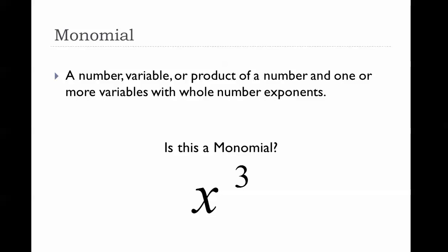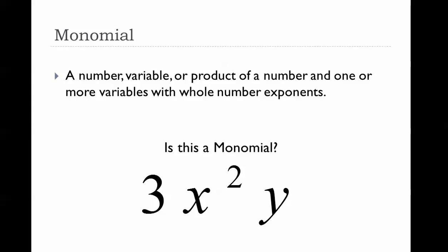X to the third — is this a monomial? Yes, it is, because it is a variable with a whole number exponent. Next, 3x squared — is this a monomial? Yes. In this case, it is the product of a number and one or more variables with whole number exponents. Here's a number, here's a variable — they both have whole number exponents.